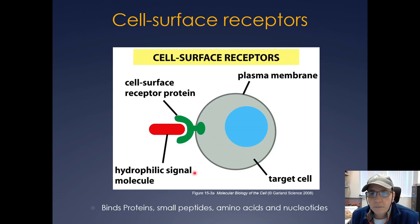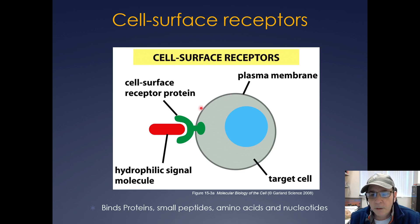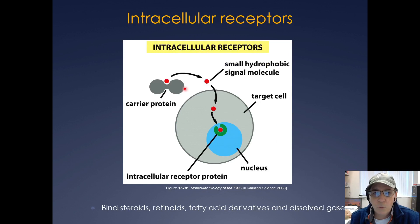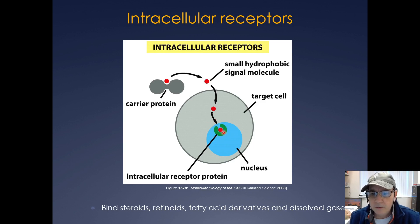There are different types of receptors in the cell. One of the most classic is the cell surface receptor — the receptor actually exposed and bound in the plasma membrane. A hydrophilic signaling molecule can bind to that cell surface receptor and elicit a response. There are also intracellular receptors, where a small hydrophobic molecule can be brought to the cell by a carrier protein, cross the lipid bilayer, and bind an intracellular receptor inside the cell to elicit a response.